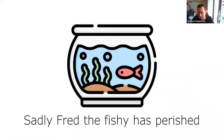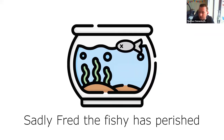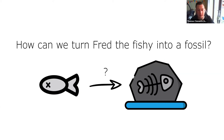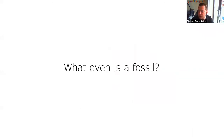Unfortunately, Fred the fish recently perished, as the life of all animals comes to an end. So we're going to try to work out how we can turn Fred into a fossil to confuse future paleontologists. The question is: how do we turn something squishy, like you and me, that has bone and tissues such as muscles and skin, into rock?